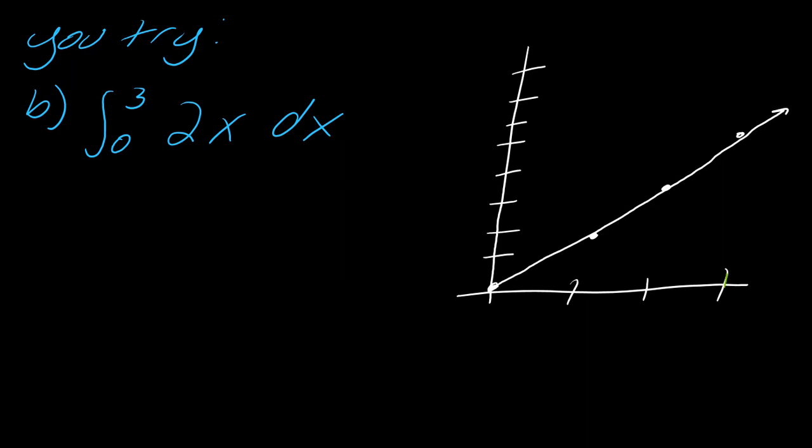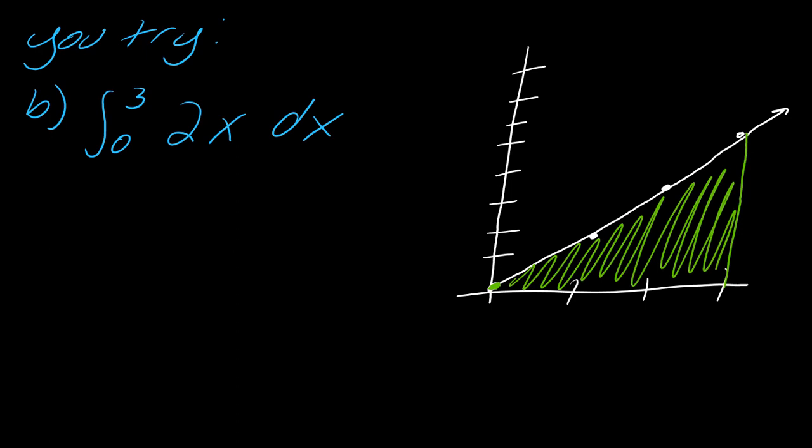And I only need this from zero to three, so I'm really going from here to here. So this is really just a triangle, a very simple one to figure out. So in this case, I go up one, two, three, four, five, six.